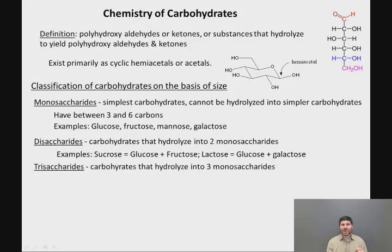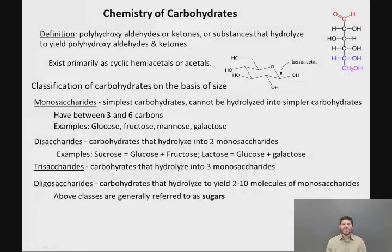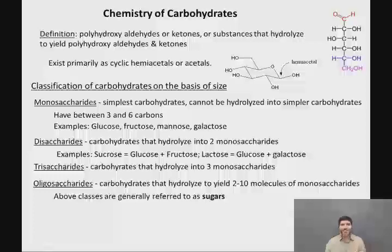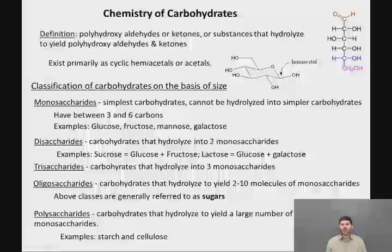Trisaccharides are carbohydrates that hydrolyze to give three monosaccharides. Oligosaccharides are carbohydrates that hydrolyze to yield between two and ten monosaccharides — so anything with ten monosaccharides or fewer is generally referred to as a sugar. The other major class of carbohydrates is polysaccharides, which hydrolyze to yield a large number of monosaccharides. The two key examples of polysaccharides are starch and cellulose.